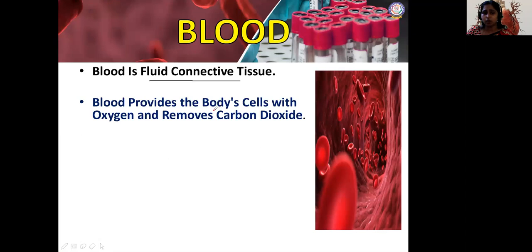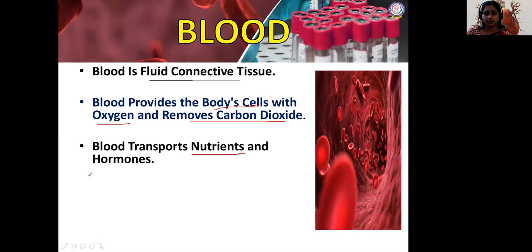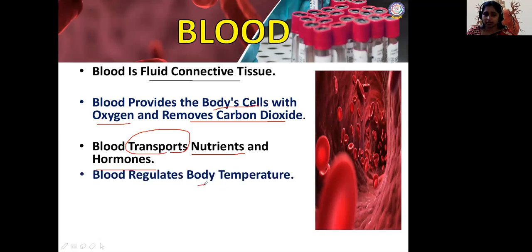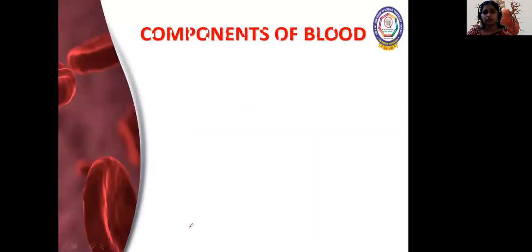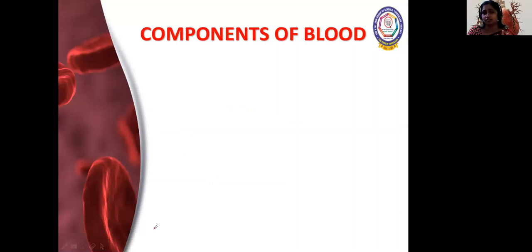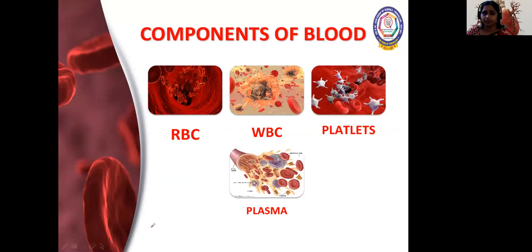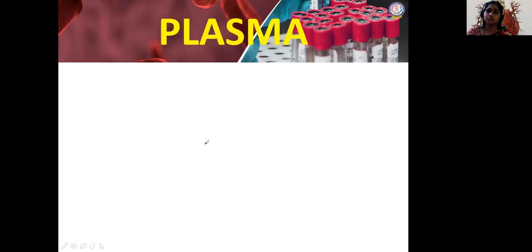Blood provides body cells with oxygen and removes carbon dioxide, which is a toxic gas for our body. Blood transports nutrients and hormones, regulates body temperature — that's why we are called homeothermic — and brings waste products to the kidney and liver for excretion. The components are plasma and formed elements: RBC, WBC, and platelets. We'll first speak about plasma.